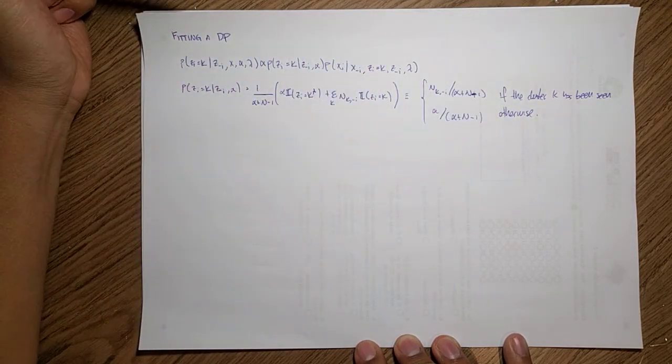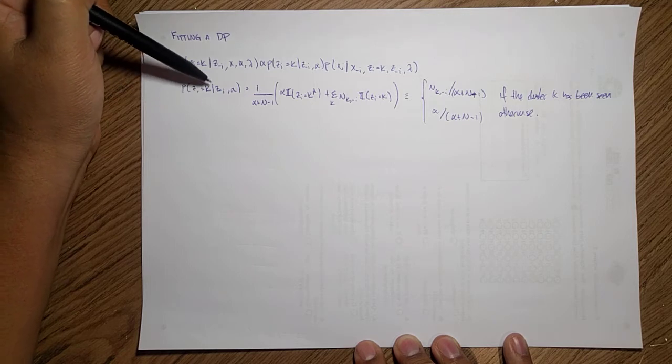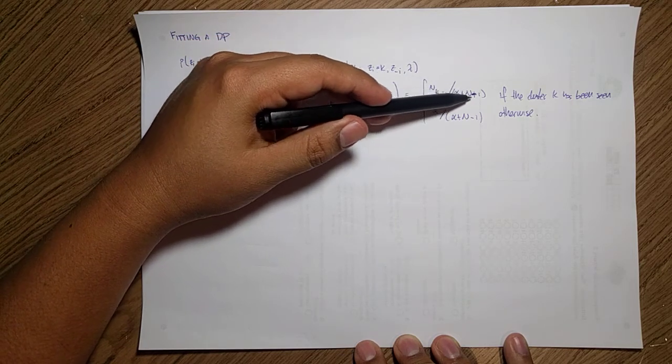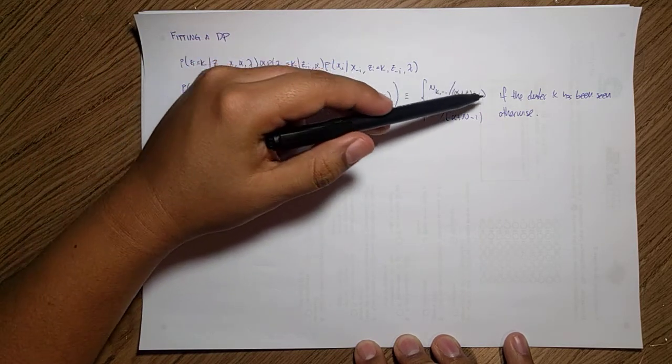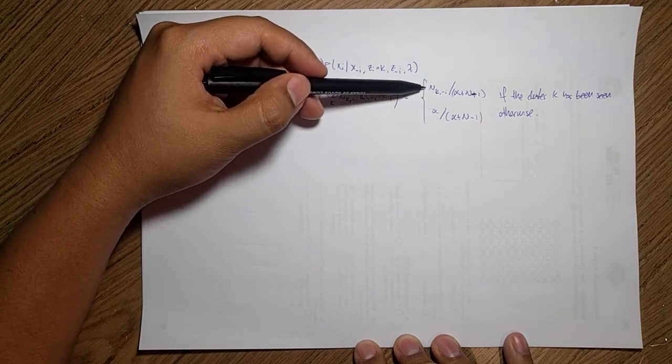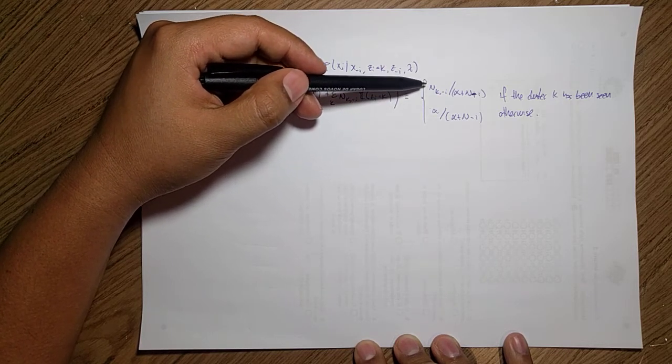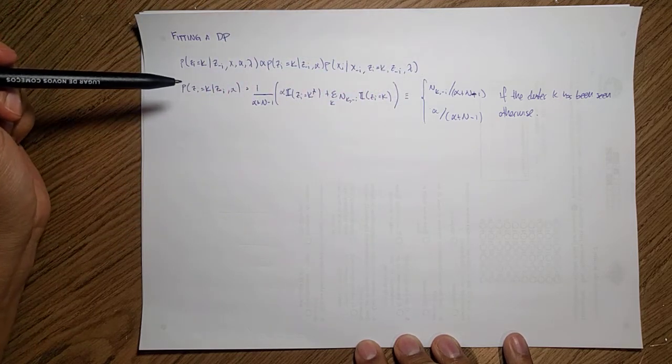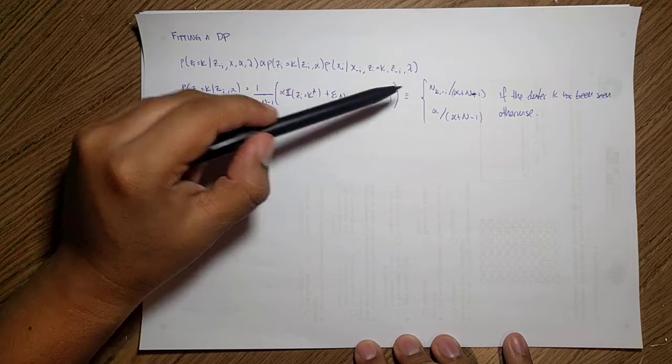And this otherwise. So this is telling me that the likelihood of seeing this k cluster here is the count over the whole amount of data if that cluster has been seen, or just my prior count in case I haven't seen that cluster.